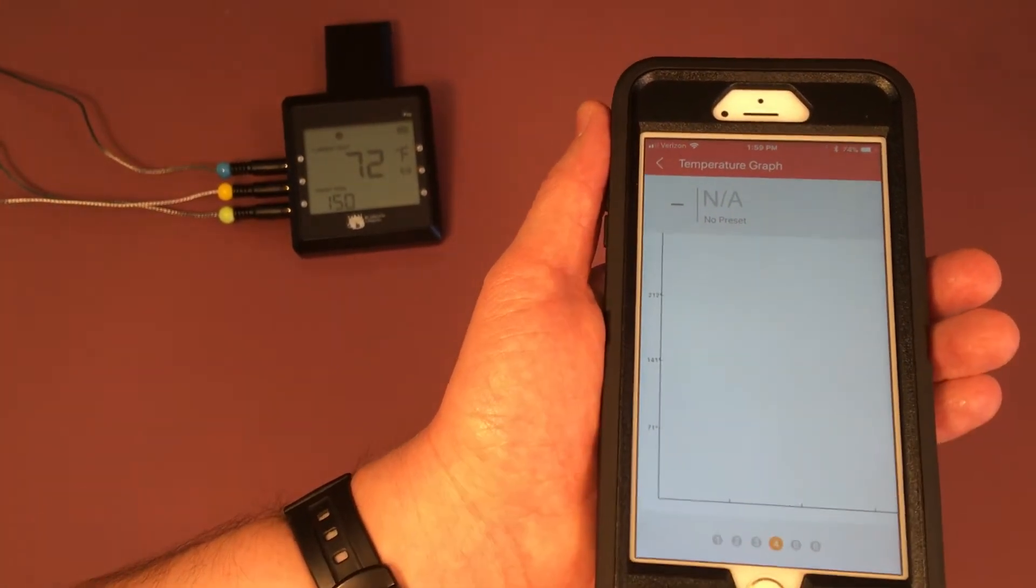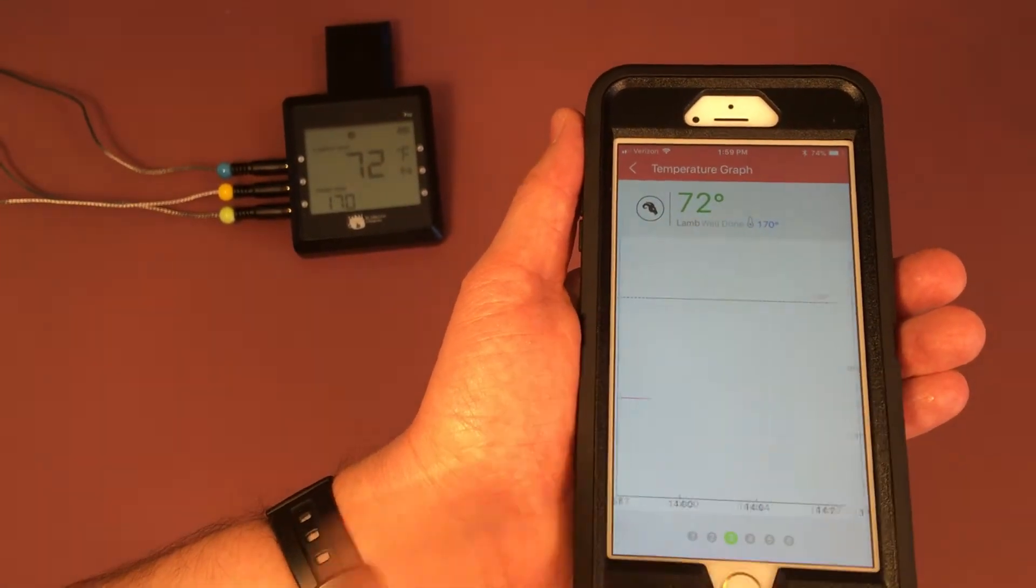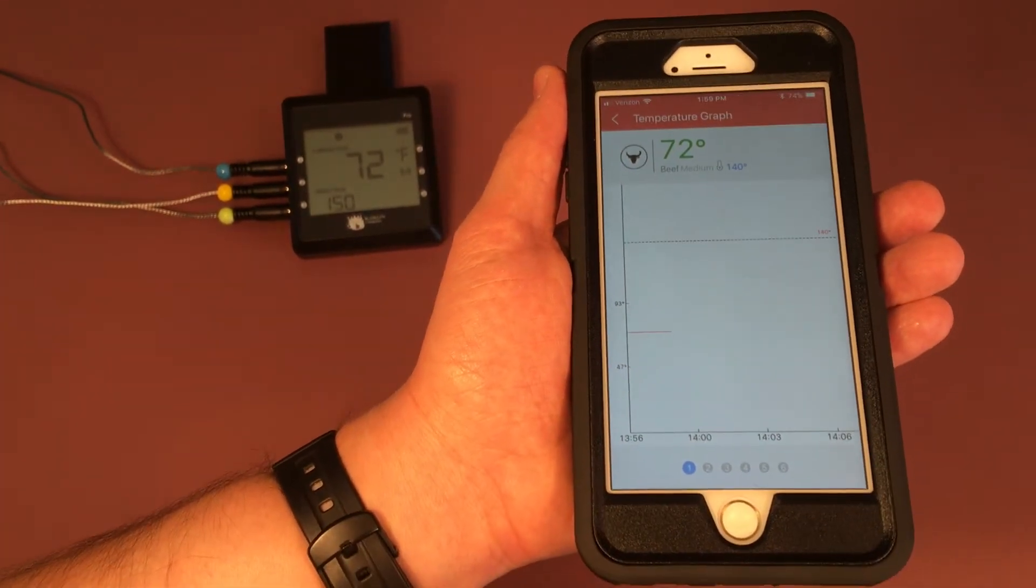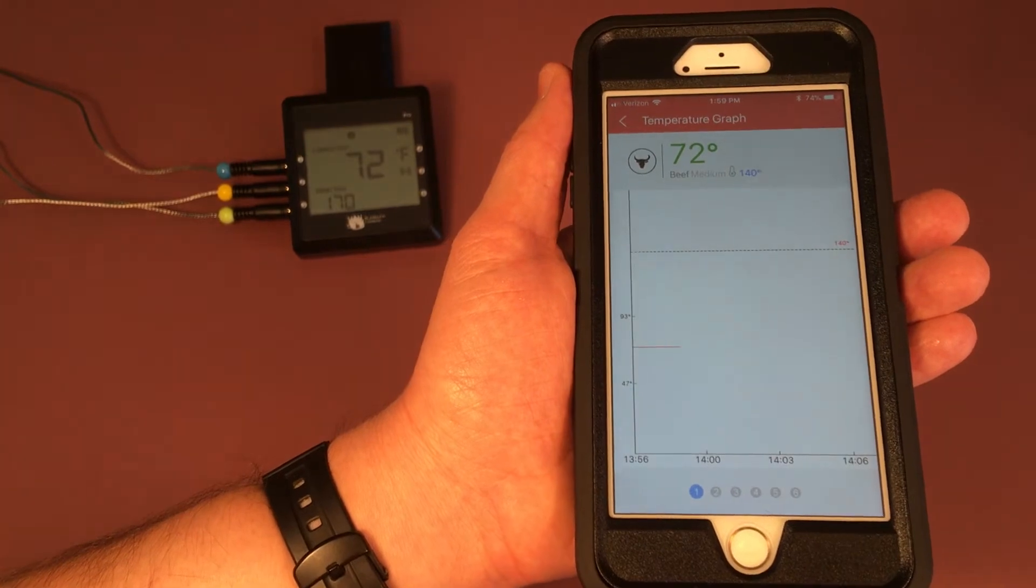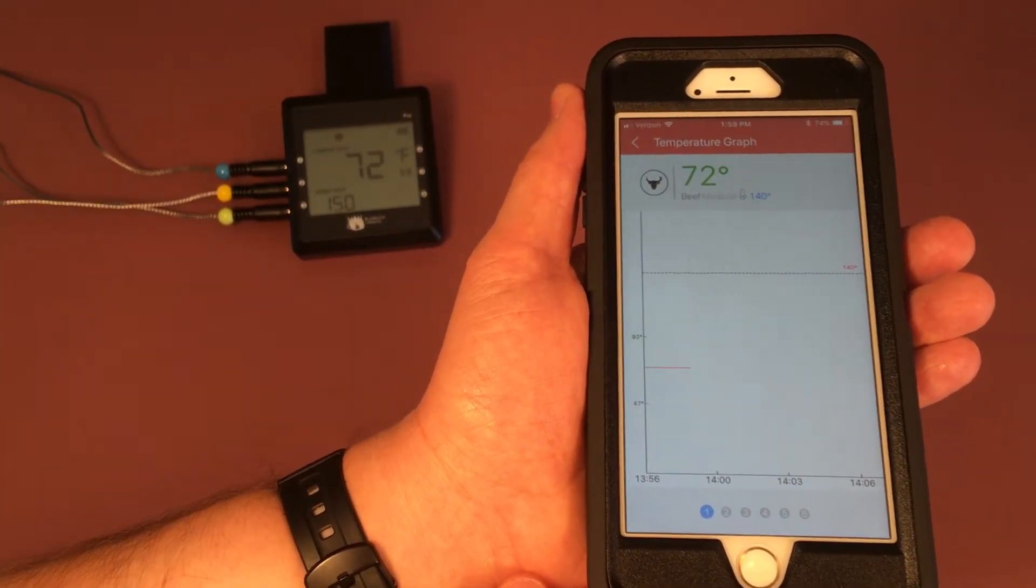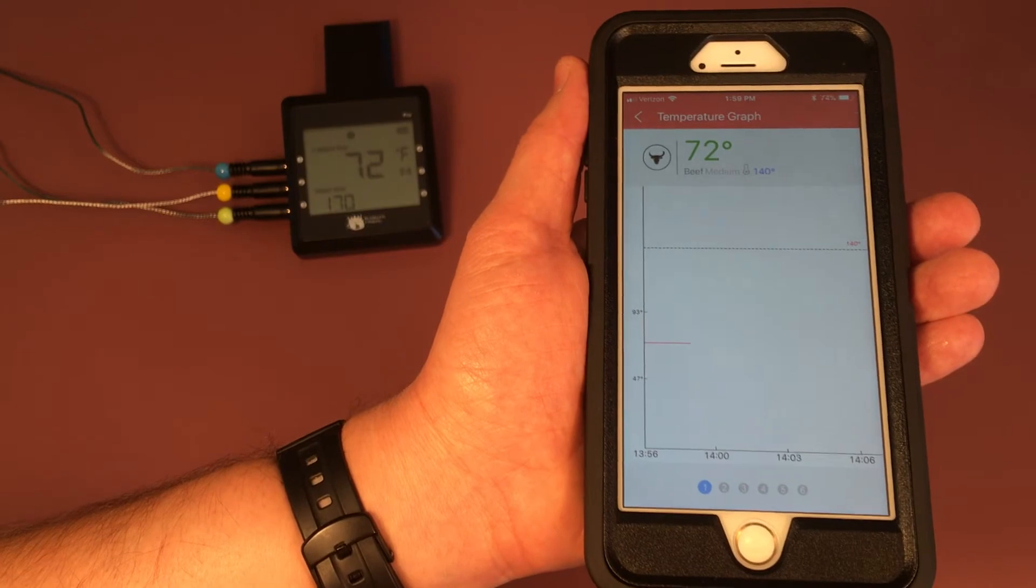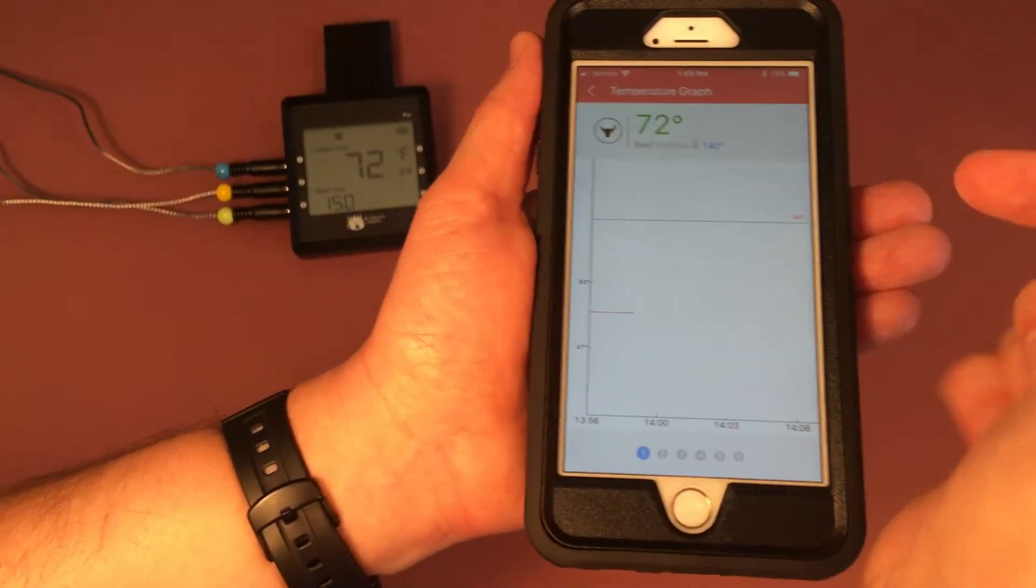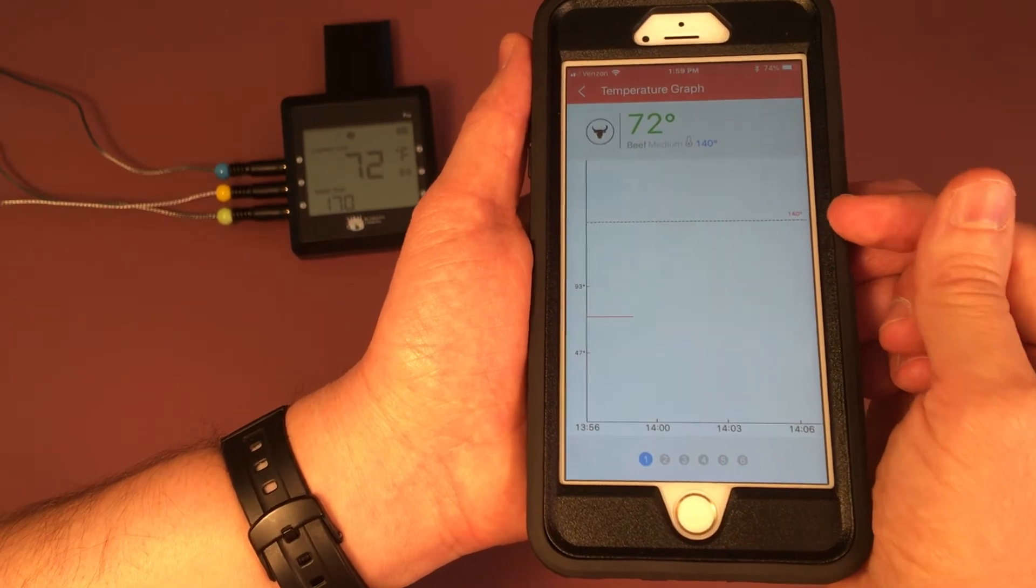One note on this is if you do edit the preset, the graphs will erase and start over. But this is nice just to see how close your meat is to being done. If you go up to, once it reaches up to this line, the alarm will sound.